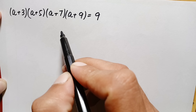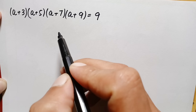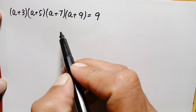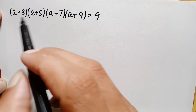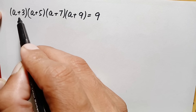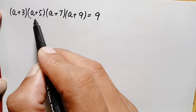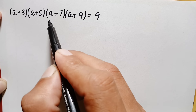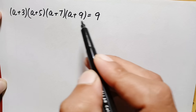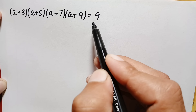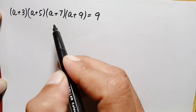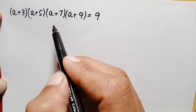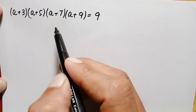Hello everyone, you are welcome. Today we have a very interesting math olympiad question: (a+3)(a+5)(a+7)(a+9) = 9. Here we will try to find all the possible solutions of this beautiful algebra problem.